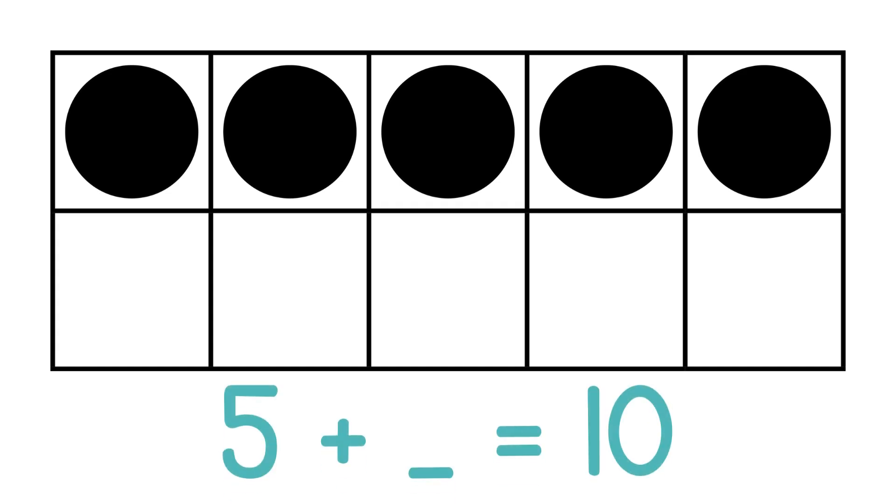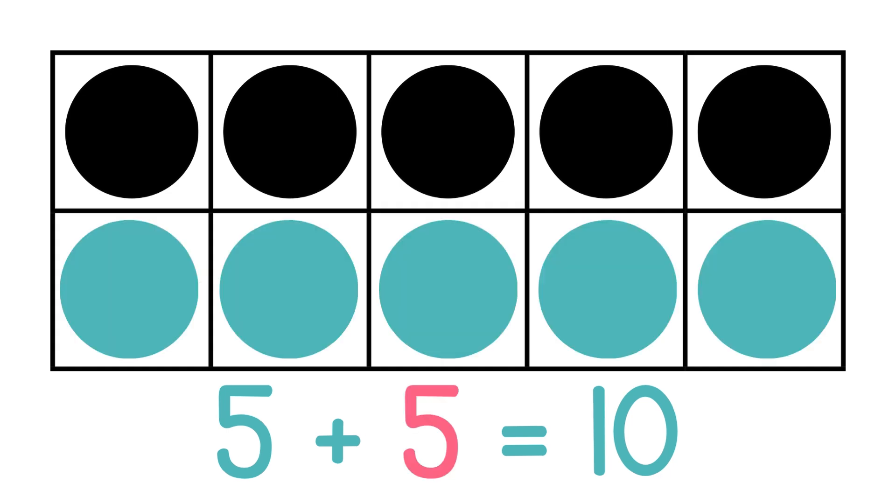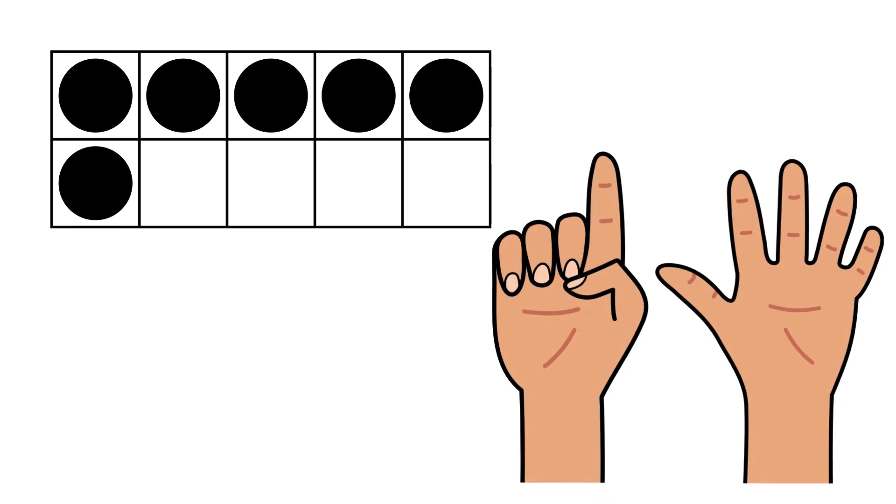We can also look at these thinking of our fingers, because most of us have 10 fingers. While we see the six circles, we can also see on the fingers six fingers up, and then how many fingers are down? Four, just like there's four empty boxes.